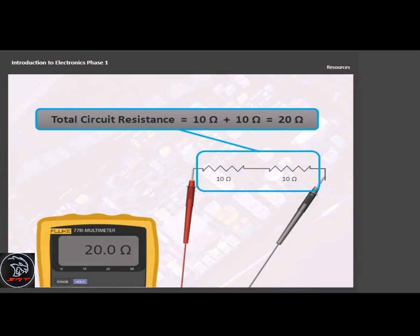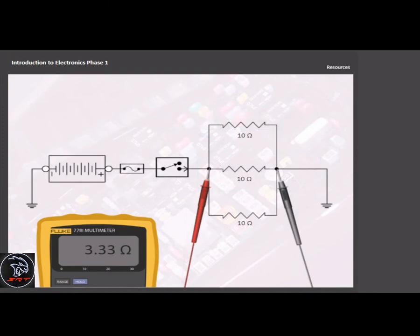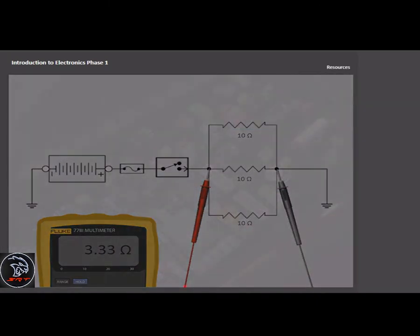The resistance measured in a parallel circuit is different because there are multiple paths for current to flow. This is why total circuit resistance is always less than any parallel branch.